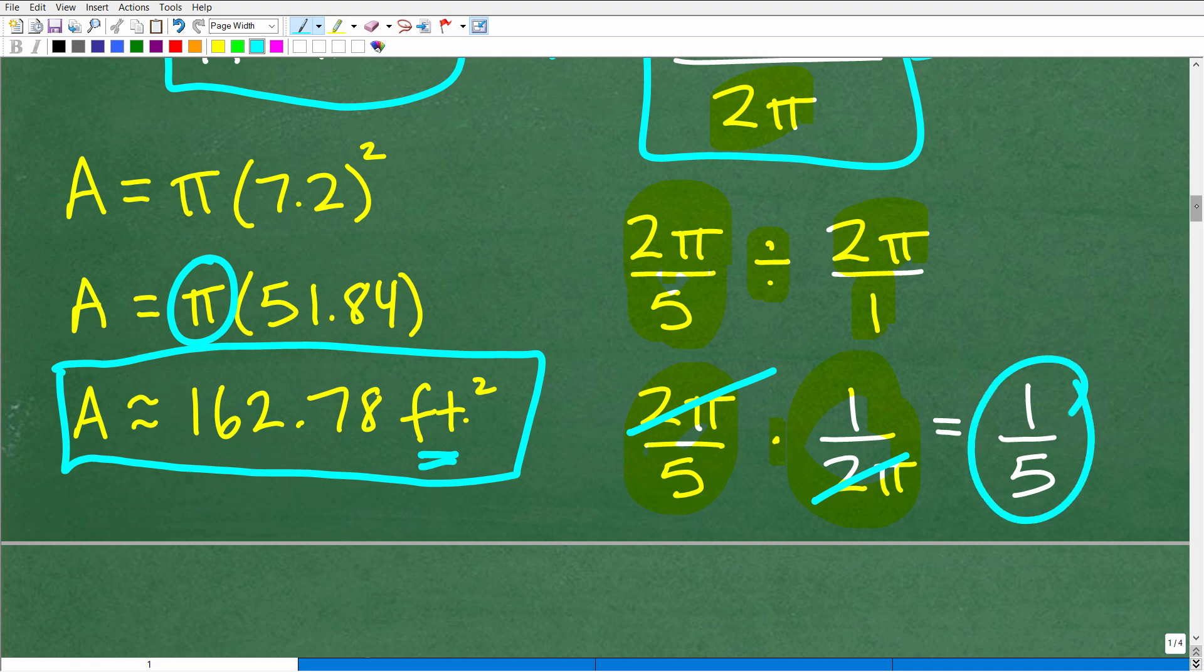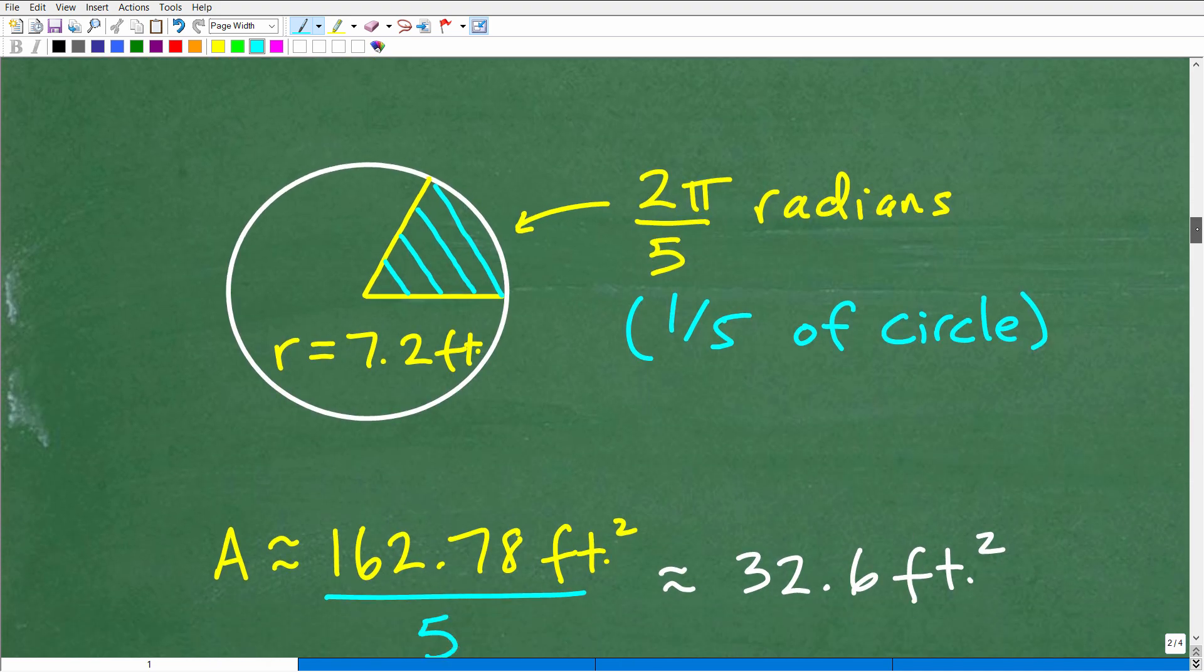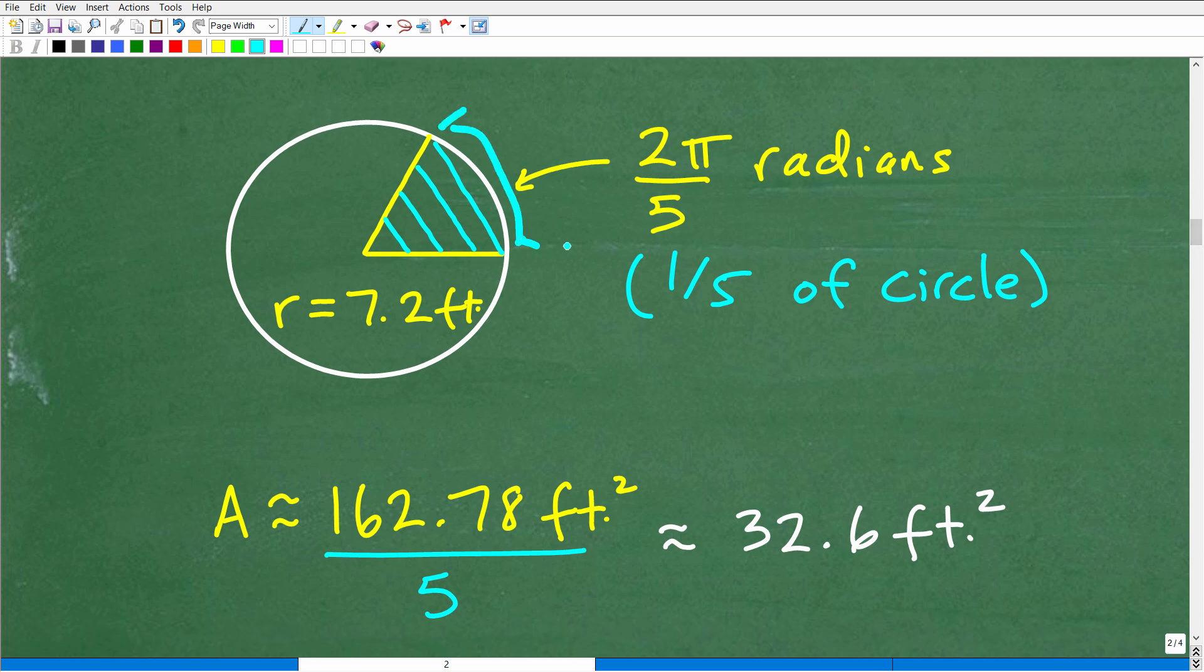So what does that mean? Well, really, that just means that this sector with the arc length or central angle of 2π over 5 is just 1 fifth of the circle. So all we need is 1 fifth of the area to define the area of that sector. So we've already found the area. We'll divide that by 5, multiply it by 1 fifth. And we get approximately 32.6 feet squared.